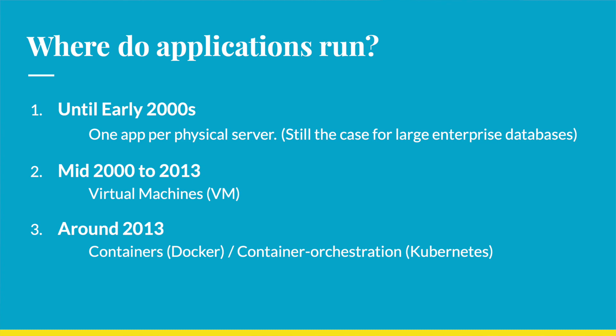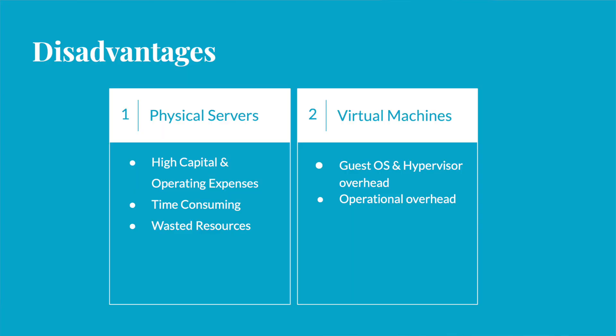As companies started using more and more containers, they needed an orchestration mechanism to create and manage them. That's when Kubernetes started getting popular, because Kubernetes was developed by Google to manage their containers — for services like Search and Gmail — and they were using Kubernetes for it. Now that we know what happened when, let's look at some disadvantages and the reasons why technology kept evolving, starting with physical servers.